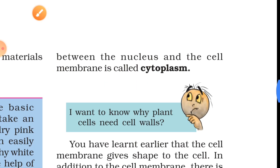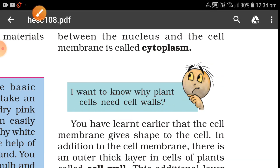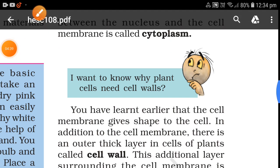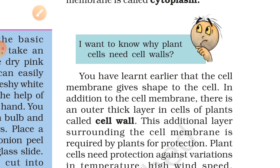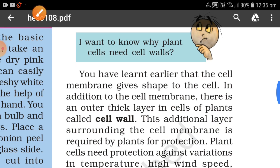Why do plants need a cell wall? You have learned that the cell membrane gives shape to the cell. In addition to the cell membrane, there is an outer thick layer in plant cells called the cell wall. This additional layer surrounding the cell membrane is required by plants for protection.